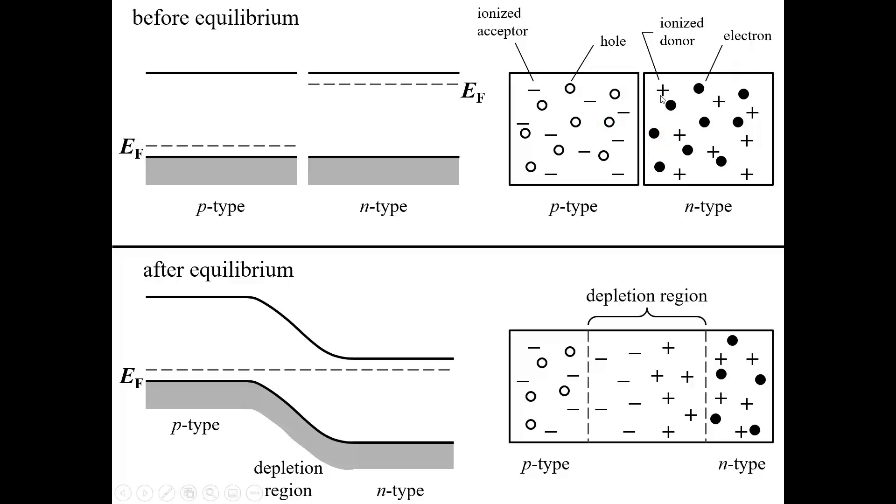But the ionized species that is left behind, let's say the phosphorus or the boron, that is not mobile. Those do not migrate through the crystal and they don't find each other. So what you're left with is you're left with what's called a depletion region. That's a region of the semiconductor where we have very few mobile charge carriers, kind of like we would have in an intrinsic semiconductor. But we have left behind these ionized acceptors and these ionized donors. And that sets up an electric field gradient across the depletion region.